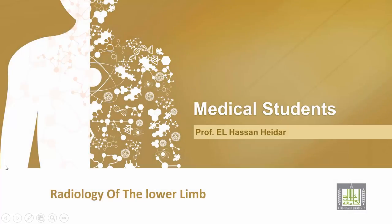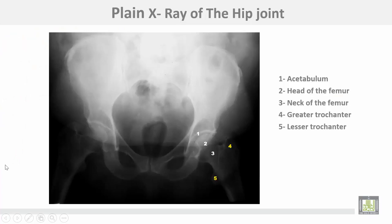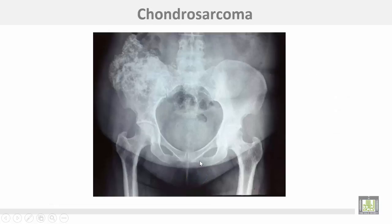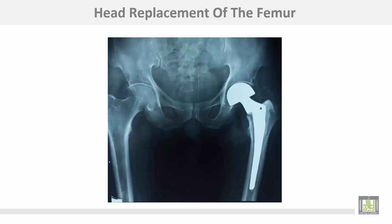Radiology of the lower limbs starts with a plain X-ray of the hip joint. This is the acetabulum, the head of the femur, neck of the femur, the greater trochanter, and the lesser trochanter. This shows an abnormality in the right hip bone showing chondrosarcoma of the ilium of the hip bone.